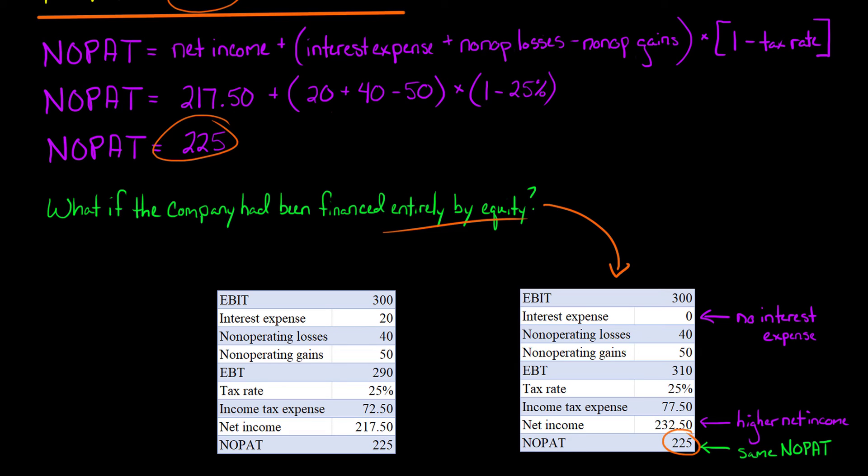However, the NOPAT is the same. In each case, we have $225 of NOPAT. So in other words, if management decides they don't want any debt and they're going to have no interest expense, that is going to increase the company's net income, but have no effect on NOPAT, because NOPAT excludes the effects of financing decisions.